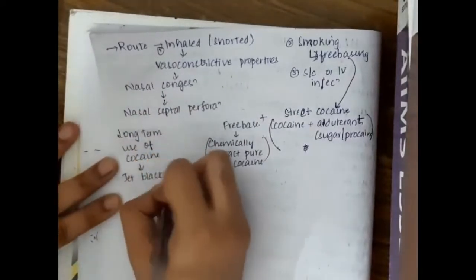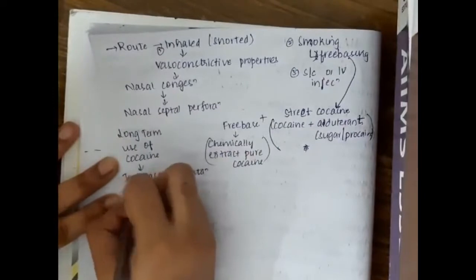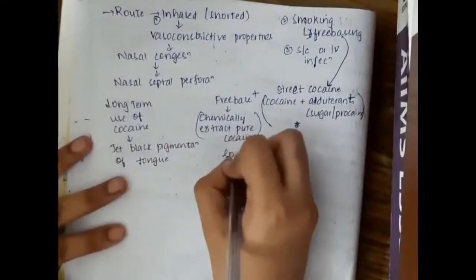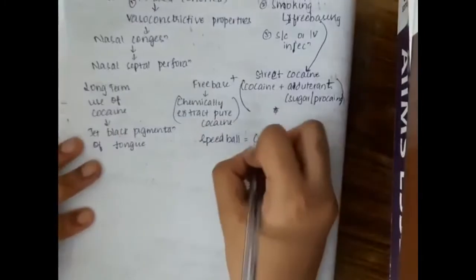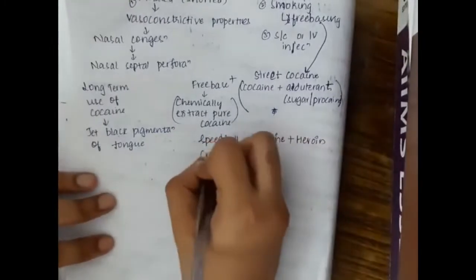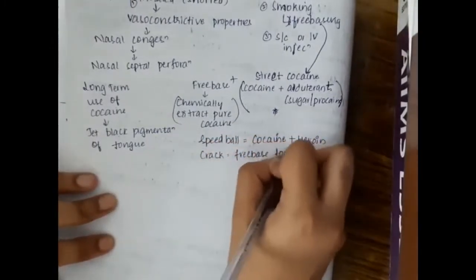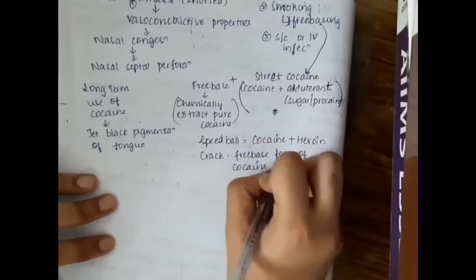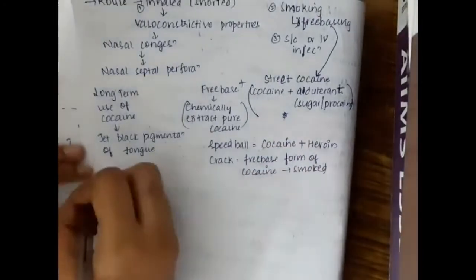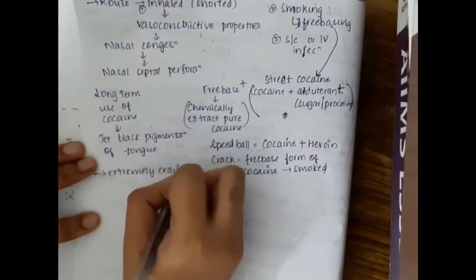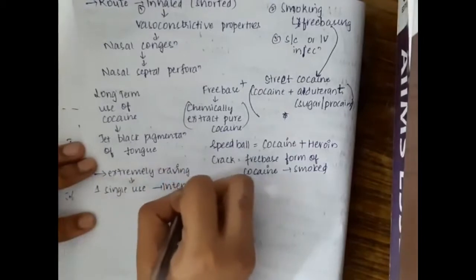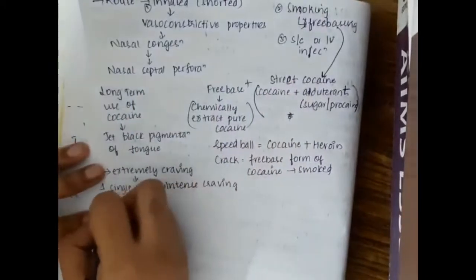With long term use of cocaine, the patient develops jet black pigmentation of the tongue. Speedball is cocaine plus heroin together. Crack is a free base form of cocaine which is smoked. This is an extremely craving drug which causes intense craving from a single use.